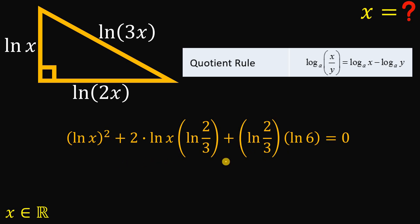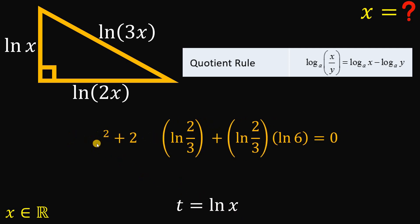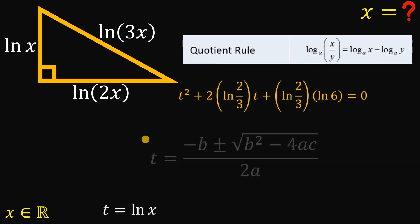This equation resembles a quadratic equation. If we let t = ln x, then all instances of ln x become t. This gives us t² + 2·ln(2/3)·t + ln(2/3)·ln 6 = 0, which is a quadratic equation in terms of t that we can solve using the quadratic formula.